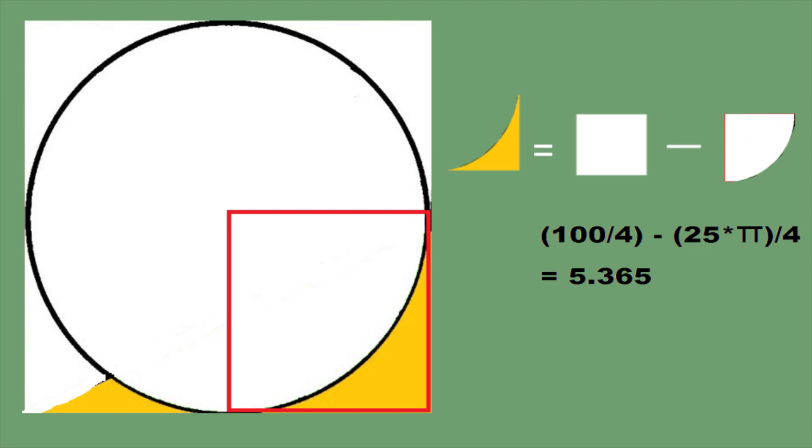If we calculate this minus that, we will get 5.365, and it is the area of this part.